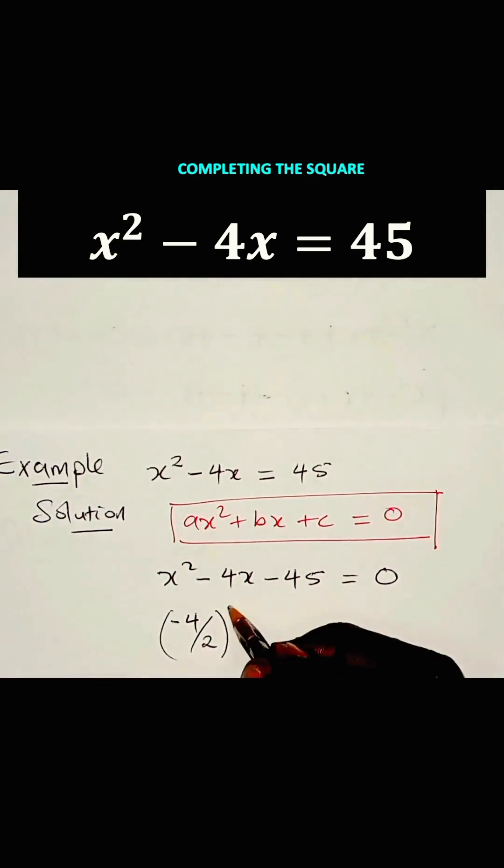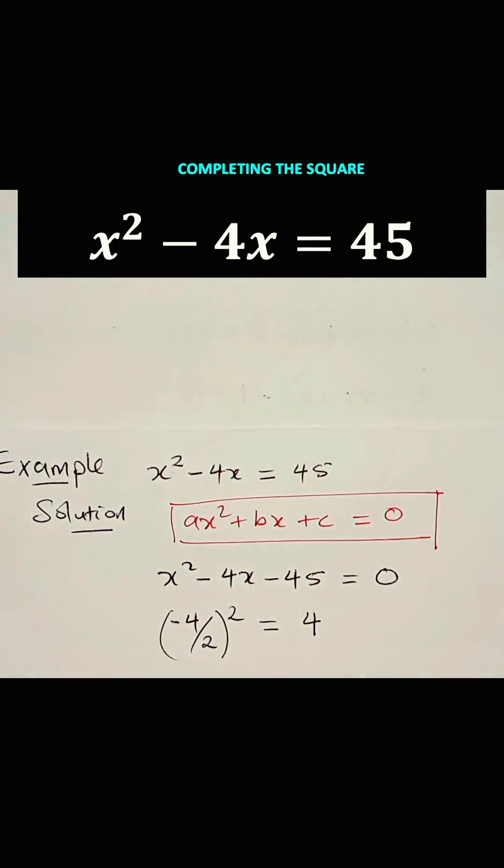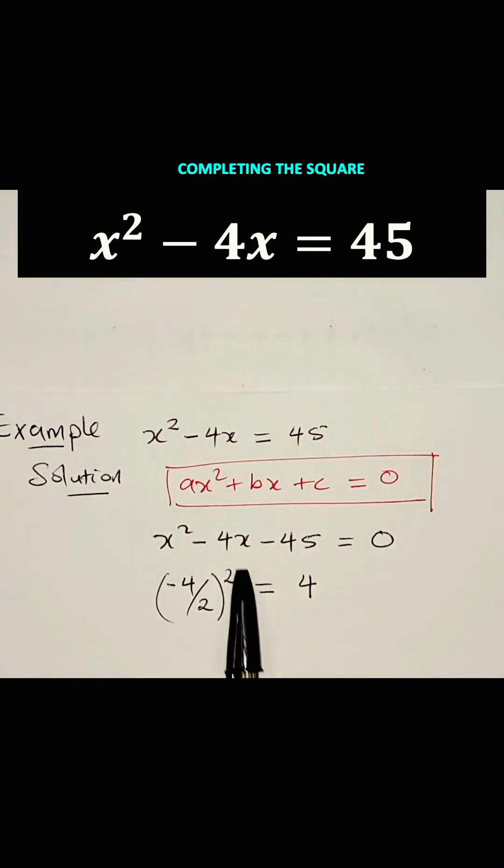We divide it by 2. We square that, and we get 4 as the answer. Now, we are going to add this 4 and subtract this 4 in that equation.